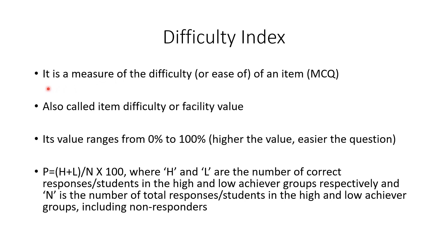The difficulty index is the measure of the difficulty — or rather the ease — of an item or MCQ. It is also called item difficulty or facility value, and its value ranges from 0 to 100%. A higher value means an easier question. It is calculated as: P = (H + L) / N × 100, where H is the number of correct responses among high achievers, L is the number of correct responses among low achievers, and N is the total number of students taken for item analysis, including non-responders.